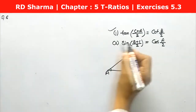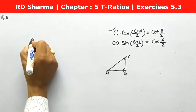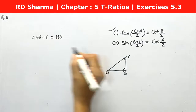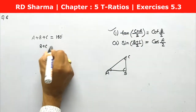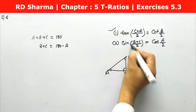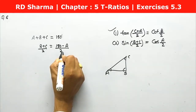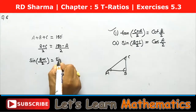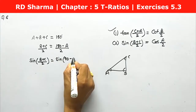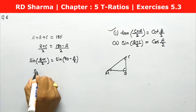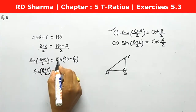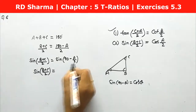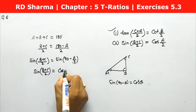Now for the second problem: prove sin of (B plus C) by 2 equals cos of (A by 2). Again using the angle sum property — triangle's three angles sum to 180 degrees — we leave B and C and transfer A to the right: B plus C equals 180 minus A. Dividing by 2: (B plus C) by 2 equals 90 minus A by 2. Applying sine: sine of (B plus C) by 2 equals sine of (90 minus A by 2). Since sine(90 minus theta) equals cos theta, this equals cos of (A by 2), which is proved.